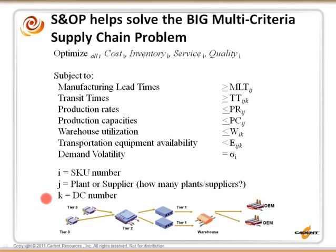We also look at S&OP as providing the basis for a heuristic solution to this multi-criteria problem. Heuristic basically means you don't have all the equations, you don't have all the information, but you still have an optimal methodology to approximate a solution. Over a long period of time, S&OP can provide that approximate solution that converges the organization to behave better.